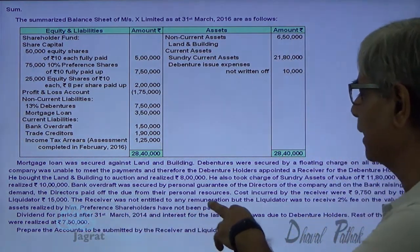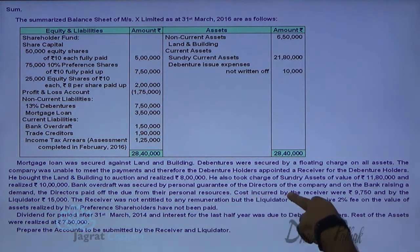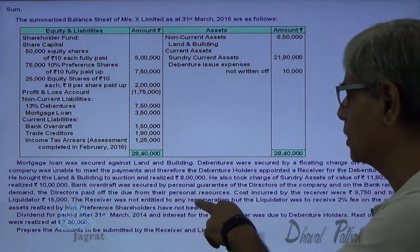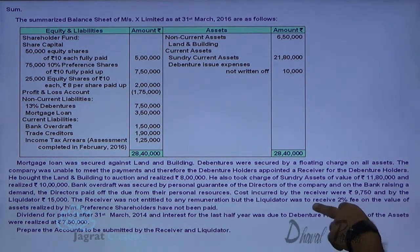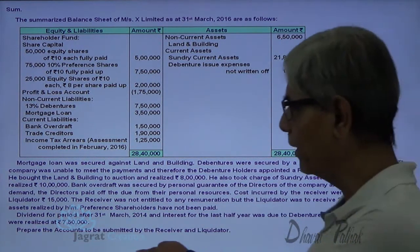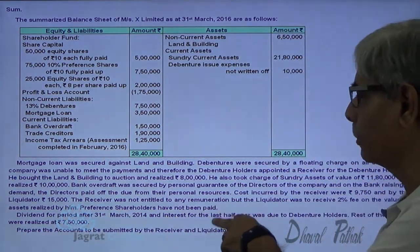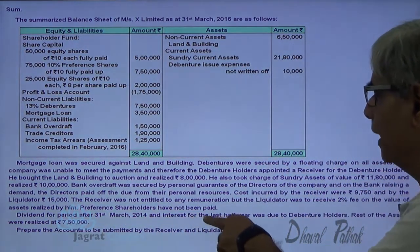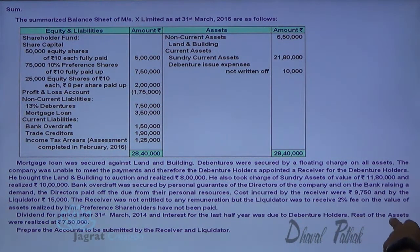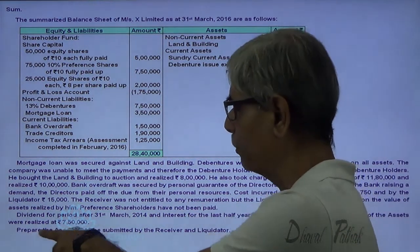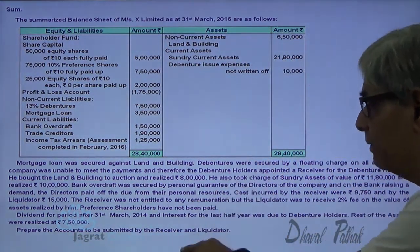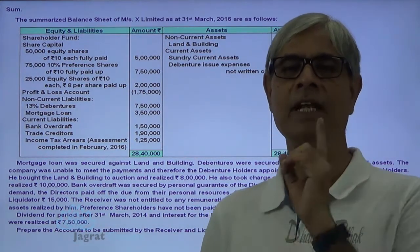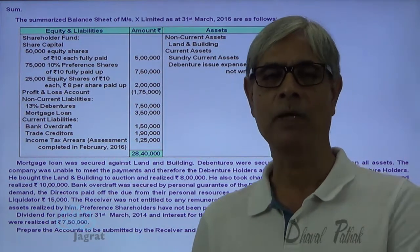The receiver was not entitled to any remuneration. The cost incurred by the receiver was 9,750 and by the liquidator 15,000. The liquidator is to receive 2% fees for the value of assets realized by him. Preference shareholders have not been paid dividend for the period from 31st March 2014, and interest for the last half year is due on debenture holders. Rest of the assets were realized for 7,50,000. We are required to prepare a statement to be submitted by the receiver and liquidator.